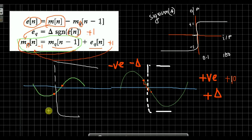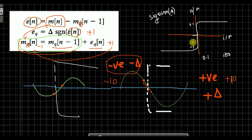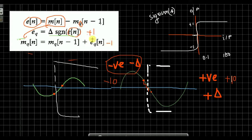So we will see this graph — this graph is negative. Suppose we have negative 10, so the signum function input is minus 1. The signum function output — as I already said — is plus 1 or minus 1, so here it is minus 1. So that means mqn-1 in the equation, my value is minus 1.